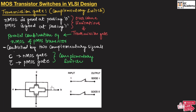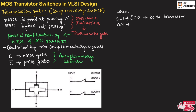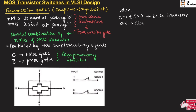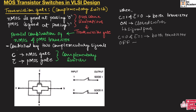The transmission gate has a parallel combination of NMOS and PMOS along with two control switches — C applied to NMOS and C-bar applied to PMOS — which are always complementary to each other. When C is 1, C-bar is 0; when C is 0, C-bar is 1. When C equals 1 and C-bar equals 0, both transistors turn on and act as a closed switch, allowing the signal to pass through the transmission gate. When C equals 0 and C-bar equals 1, both transistors turn off and act as an open switch, so no signal passes.